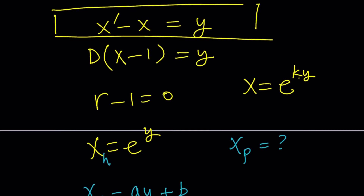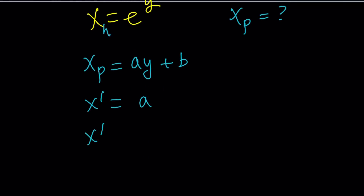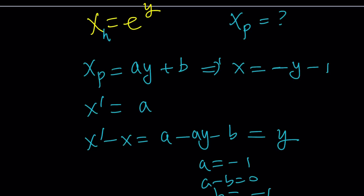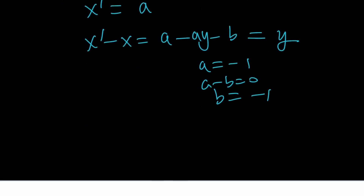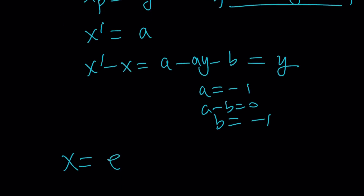So the particular solution is x equals negative y minus 1. Adding the homogeneous and particular solutions gives the general solution: x equals c times e to the y minus y minus 1. You can then think about how to convert this to Lambert's W form to solve explicitly for y.